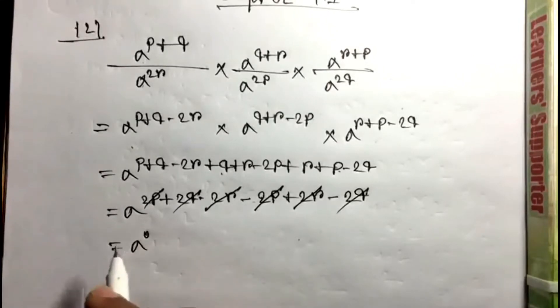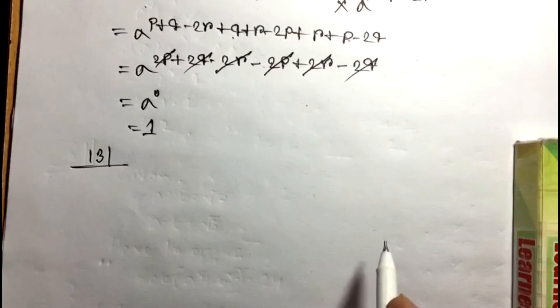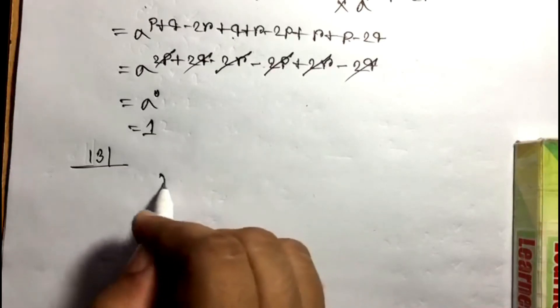So a to the naught, which means one. Problem 13: x to the power a, x to the power b, whole one by ab.